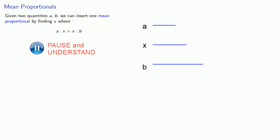This is not a proportional that goes around bullying other proportionals, but rather it emerges as follows. Given two quantities, a and b, we can insert one mean proportional by finding an x where a is to x as x is to b. And you can see here that in this context, the idea of a mean proportional is that it's some place in the middle, some place between a and b.